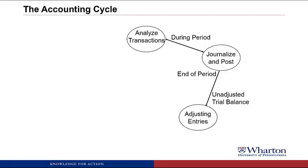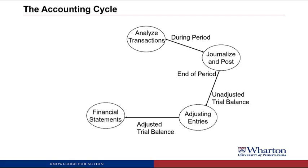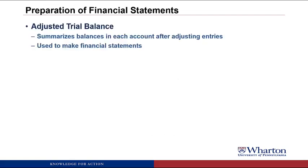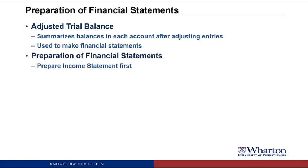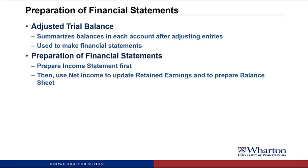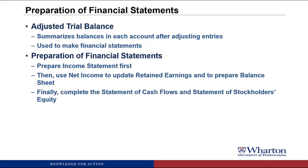Last video, we completed the adjusting entries for RelicSpotter. Now we can move on to the next two steps in the accounting cycle: putting together an adjusted trial balance and preparing financial statements. The adjusted trial balance is where we add everything up after doing adjusting entries and make sure our debits equal our credits. Then we use those balances to put together financial statements. We do the income statement first, then use net income to update retained earnings and prepare the balance sheet. Finally, we'll complete the statement of cash flows and the statement of stockholders' equity.